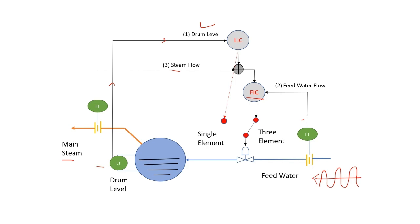The main steam flow can be added into the output of the level controller, and this combined output can go as a set point to the flow controller. Here the steam flow acts as a feed forward control load.